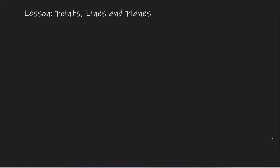Let's start by defining a point. So what exactly is a point? A point is nothing more than just a dot. In geometry, we're going to be using points to represent some kind of a location.